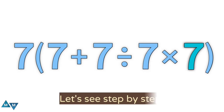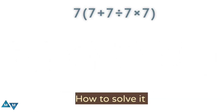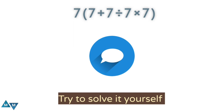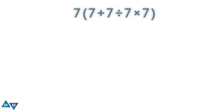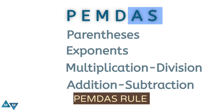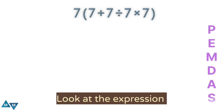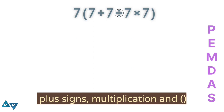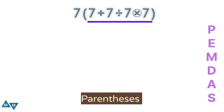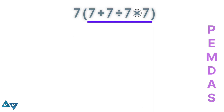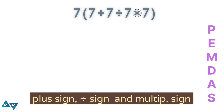So the third challenge — let's see step by step how to solve it. Try to solve it yourself and comment your answer below. We can use PEMDAS to solve this expression, as it helps determine the sequence in which expressions should be evaluated. Looking at the expression, we have a plus sign, a division sign, multiplication signs, and parentheses. The first thing we do is work inside the parentheses. Inside, we have a plus sign, a division sign, and a multiplication sign.